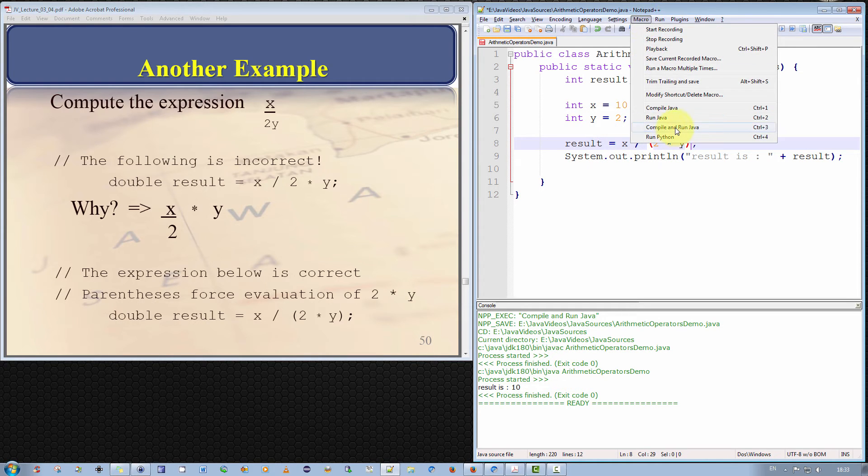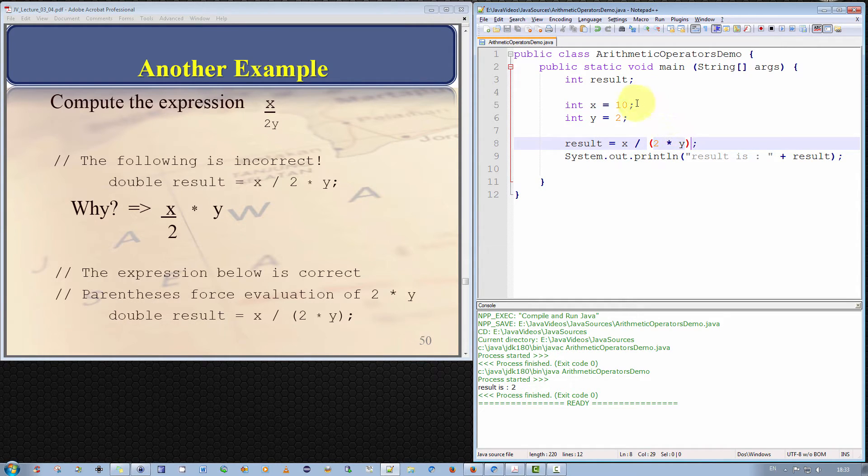Okay so when we compile and run that the answer should be well 10 divided by 4 is 2.5. It goes in two times with a remainder of 2. Now here lies in the problem. Our result is 2. Is this wrong?